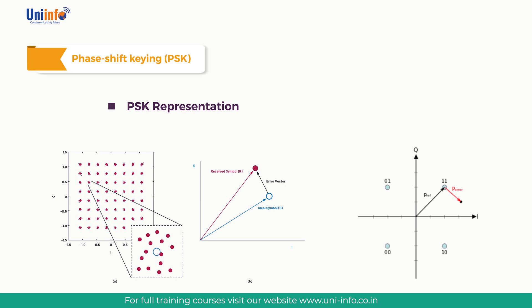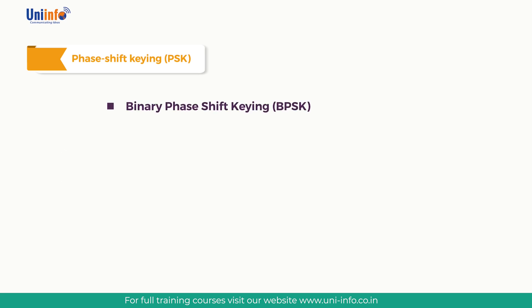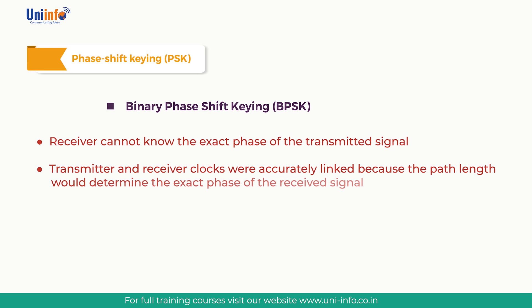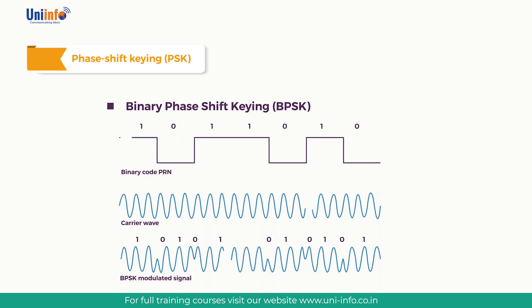The problem with phase shift keying is that the receiver cannot know the exact phase of the transmitted signal to determine whether it is in a mark or space condition. This would not be possible even if transmitter and receiver clocks were accurately linked, because the path length determines the exact phase of the received signal. To overcome this, PSK systems use a differential method of encoding data onto the carrier — for example, making a phase change equal to a one and no phase change equal to a zero.